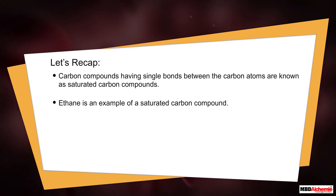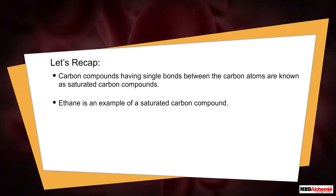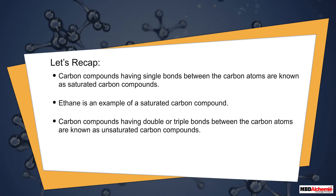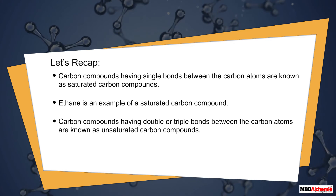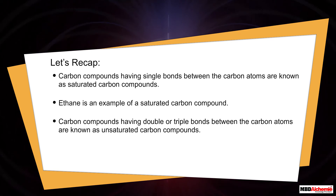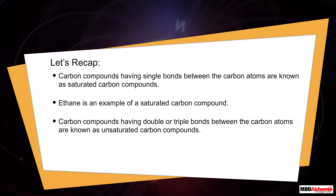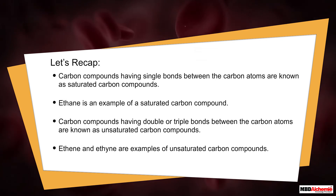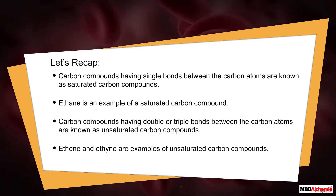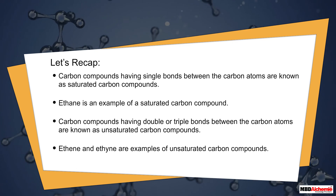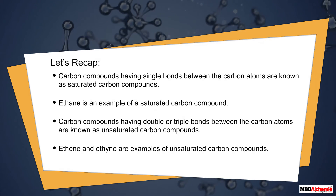Let's recap. Carbon compounds having single bonds between the carbon atoms are known as saturated carbon compounds — ethane is an example. Carbon compounds having double or triple bonds between the carbon atoms are known as unsaturated carbon compounds — ethene and ethyne are examples of unsaturated carbon compounds.